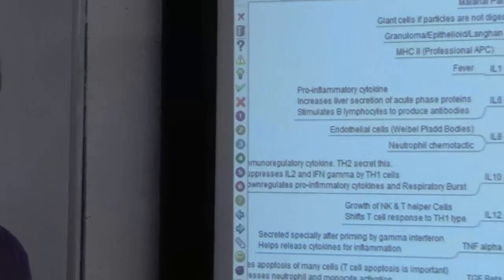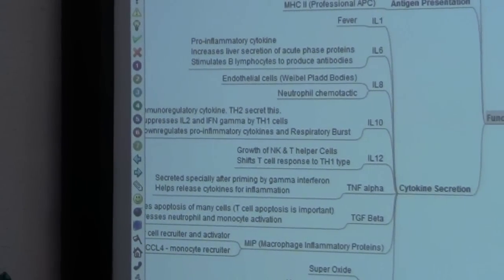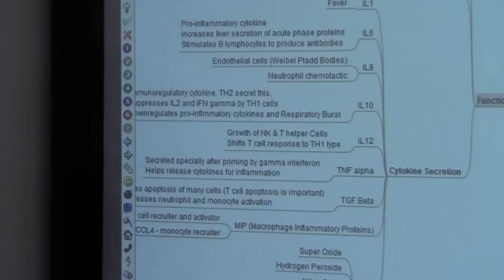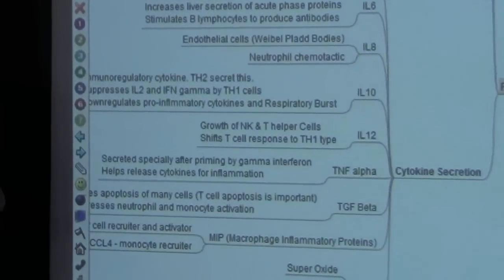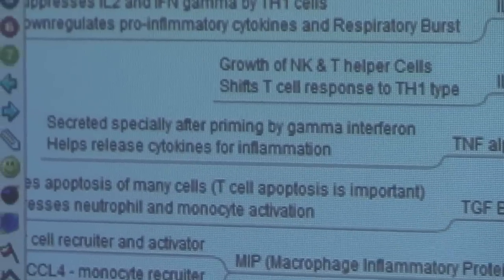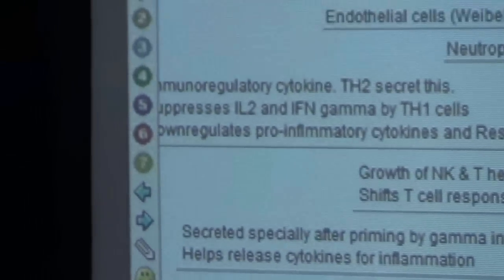tumor necrosis factor, we talked about it before. The tumor necrosis factor is released from the macrophages as well, and as we saw, it's a pro-inflammatory chemical substance. We also saw that inside the Kupffer cells, when it is released from there, it would act on the stellate cell of the liver and cause the collagen to be secreted and fibrosis. So really, it would be causing the inflammation.